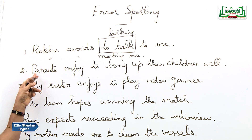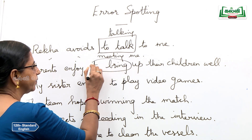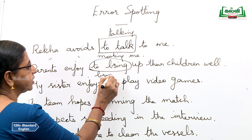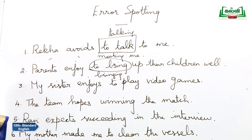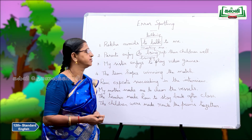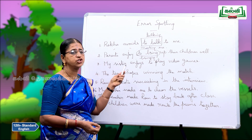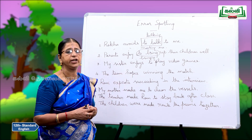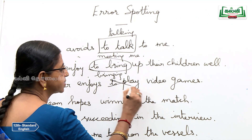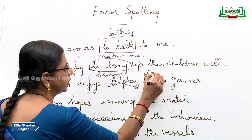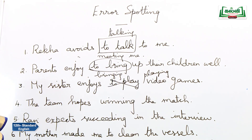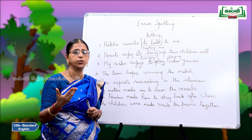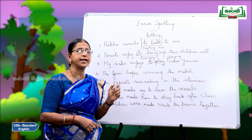Second sentence: Parents enjoy to bring up their children well. It should be parents enjoy bringing up their children. Parents enjoy caring for their children. My sister enjoys playing video games. My sister enjoys cycling to school. My sister enjoys reading stories aloud to everyone. So it is the -ing form here.